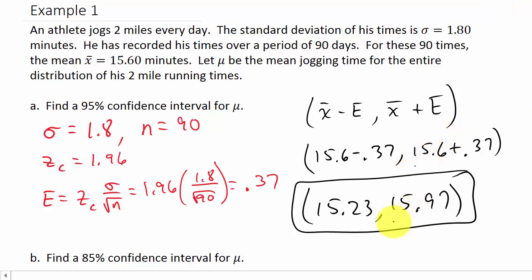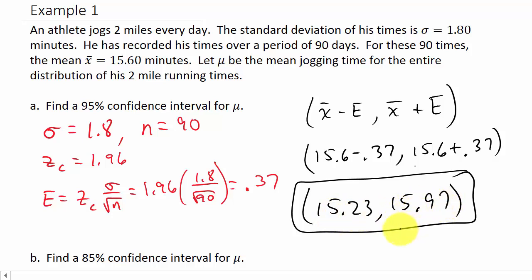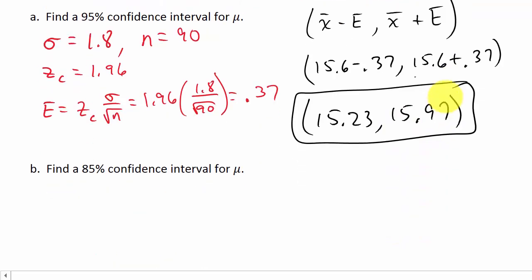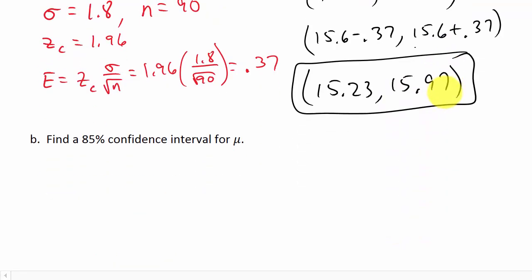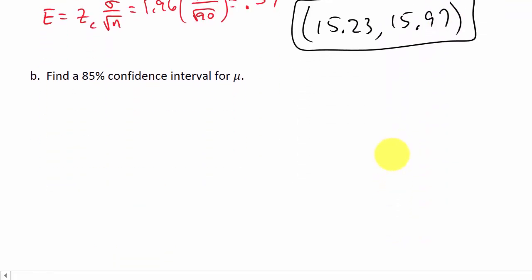With 95% confidence we can say that the mean jogging time mu is between 15.23 and 15.97 minutes. Now let's do an 85% confidence interval.